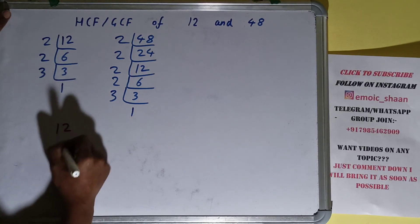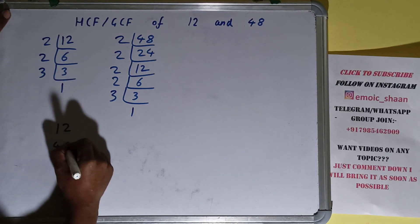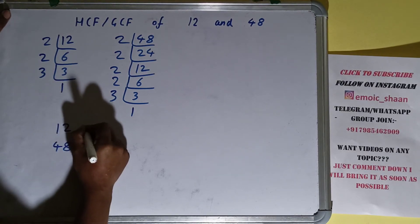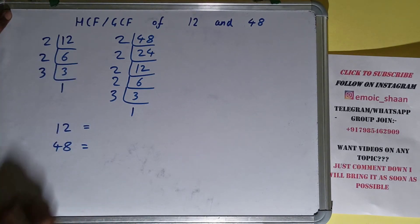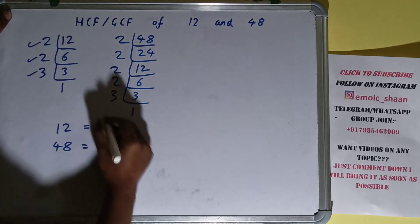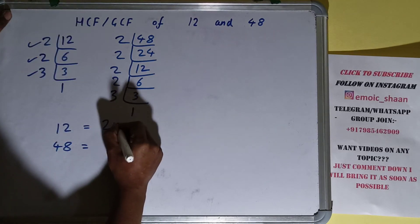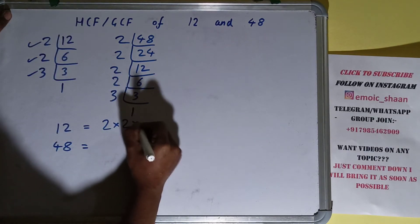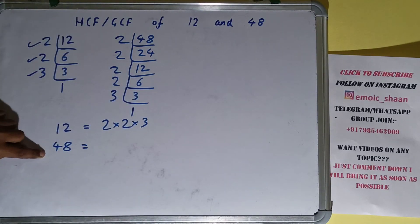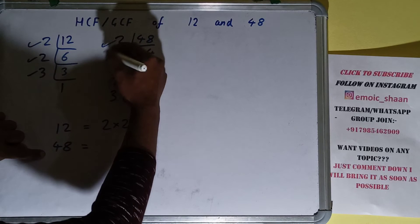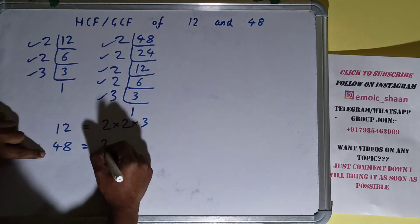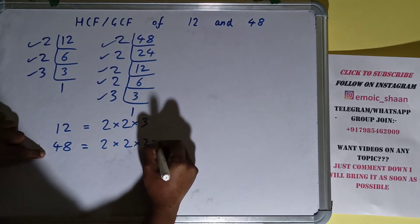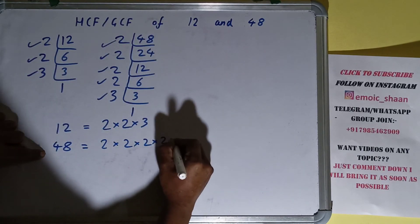The next thing we need to do is write down each of the numbers with their respective prime factors. For 12, the prime factors we got are 2, 2, and 3 — that is 2 × 2 × 3. For 48, the prime factors we got are 2, 2, 2, 2, and 3 — that is 2 × 2 × 2 × 2 × 3.